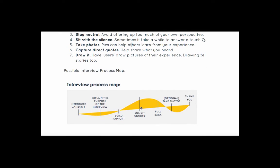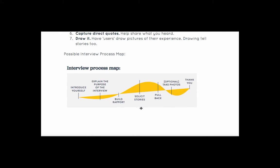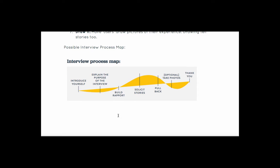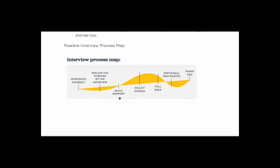Looking at the interview process map — this is directly from the D School — obviously you introduce yourself and explain a little bit of the purpose. Build rapport if you've never met the person, but in this case you probably already have rapport. Then you go through those interview tips as I just mentioned.